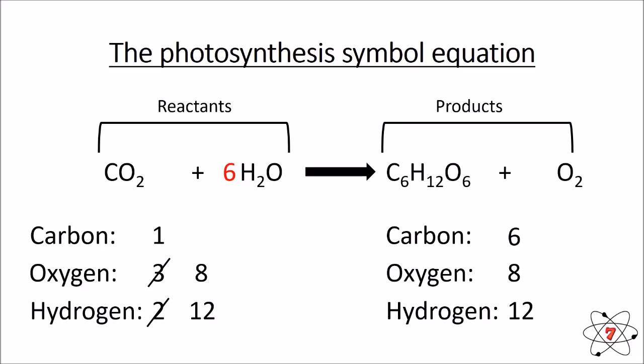I place a number six in front of CO₂. Six times one carbon = six carbon atoms — carbon is now balanced. However, six multiplied by O₂ gives another twelve oxygen atoms, so I have twelve oxygen atoms in CO₂ plus six in water, giving eighteen oxygen atoms on the reactant side. On the product side I have eight oxygens — six within glucose and two as elemental oxygen — so oxygen is not balanced.